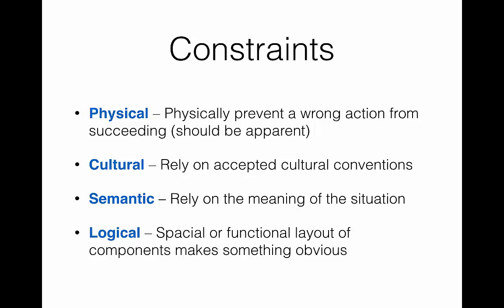Norman talks about four different types of constraints: Physical, Cultural, Semantic, and Logical.